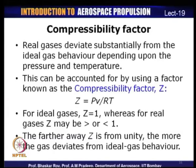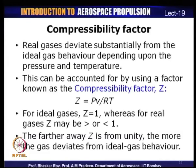Real gases can deviate substantially from ideal gas behavior depending on the pressure and temperature involved. To account for this deviation, we define the compressibility factor Z = PV/RT. For an ideal gas, Z equals 1. For a real gas, Z may be greater than or less than 1 depending on operating pressure and temperature. The farther Z is from unity, the greater the deviation of the gas from ideal gas behavior.